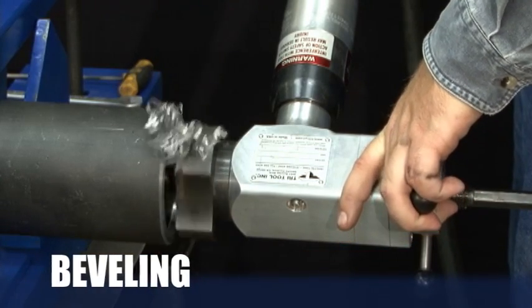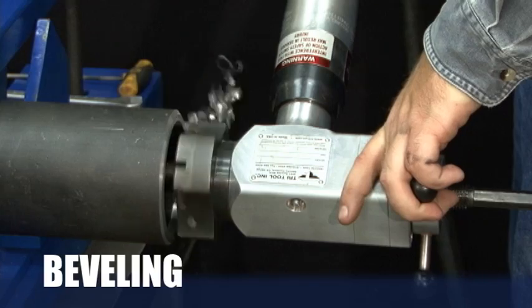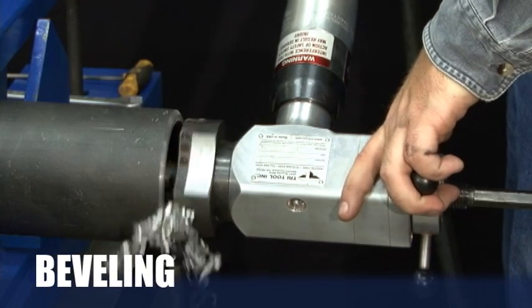The 204B will machine pipe from 1.25 to 4 inches in the form tool configuration.